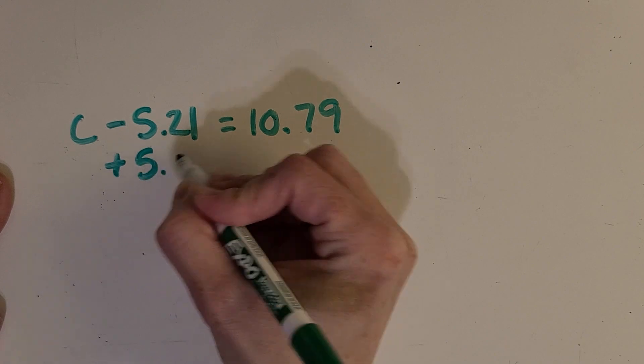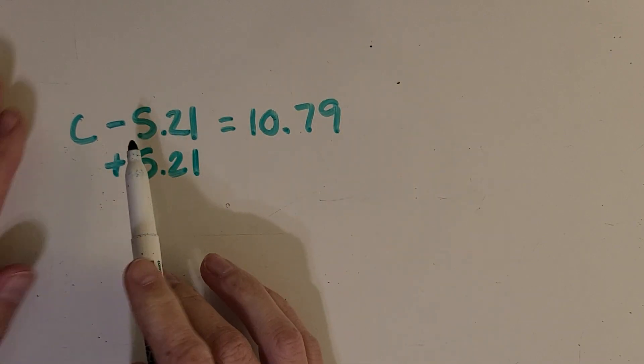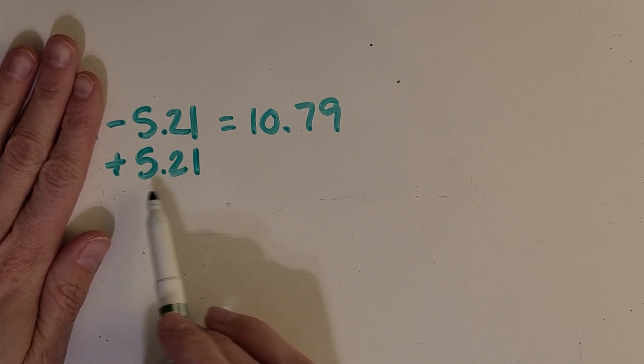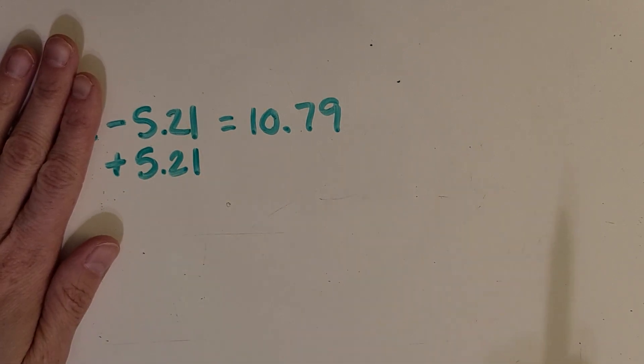You got it. Addition. If I think of this as a negative number, if I add that same amount, I'm going to get up to 0.